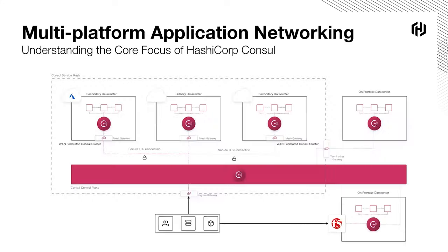This is the single control plane concept — a control mechanism that creates a single source of truth where services register and different architectural environments query it to understand where services are. Once you have the underlying architecture, services that spin up and spin down can be routed across the environment. For example, a managed Kubernetes AKS cluster spinning up new applications that need to connect to an on-premise component in a traditional data center.